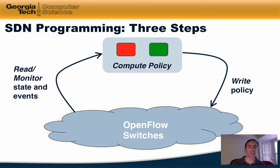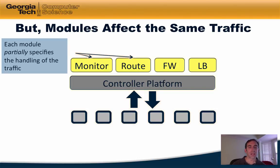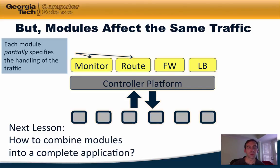Returning to our abstractions, we can see how to develop programming. We've seen one example of a programming language that allows the controller to read and monitor network state. The next step is to develop mechanisms that allow the programmer to write control programs that compute network policy based on that state. Computing policy is particularly challenging because each of these modules that observe network state can partially specify how traffic should be handled, but those modules might conflict. For example, you might write a routing module that explicitly conflicts with a firewall or load balancing module. In the next lesson, we will talk about programming constructs that allow the programmer to combine modules into a complete application that seamlessly resolves these conflicts.